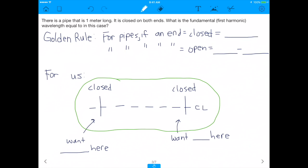But basically, when you have a pipe that is closed, right? If it tells you that a pipe is closed, that means you have to assume that there is a node at the end of that pipe, okay? If it tells you that a pipe is open on one end, you have to assume there's an anti-node, alright?